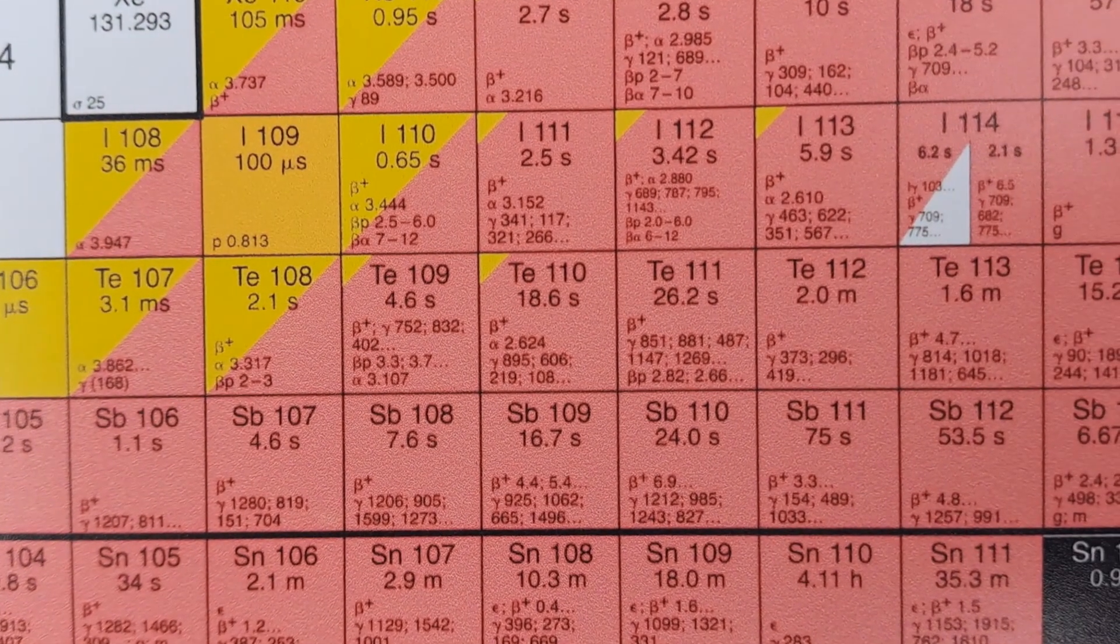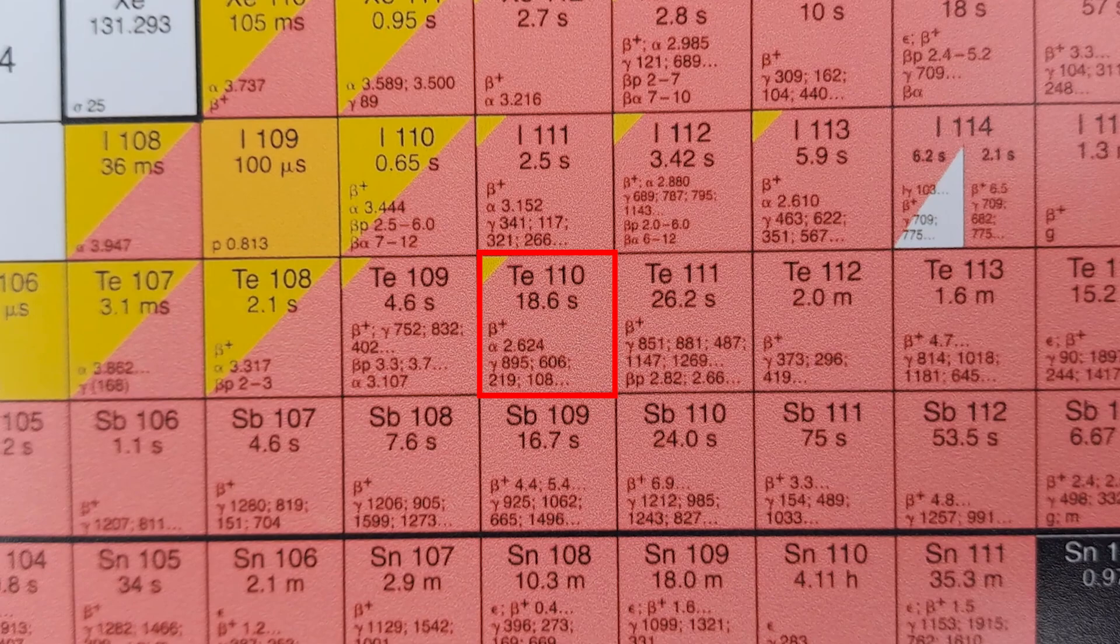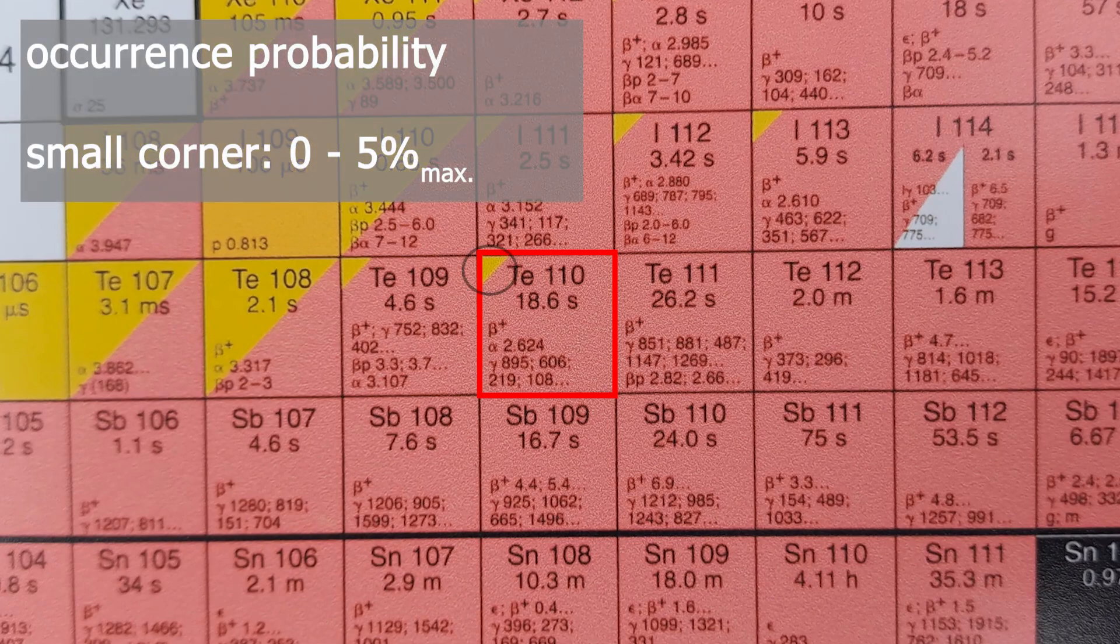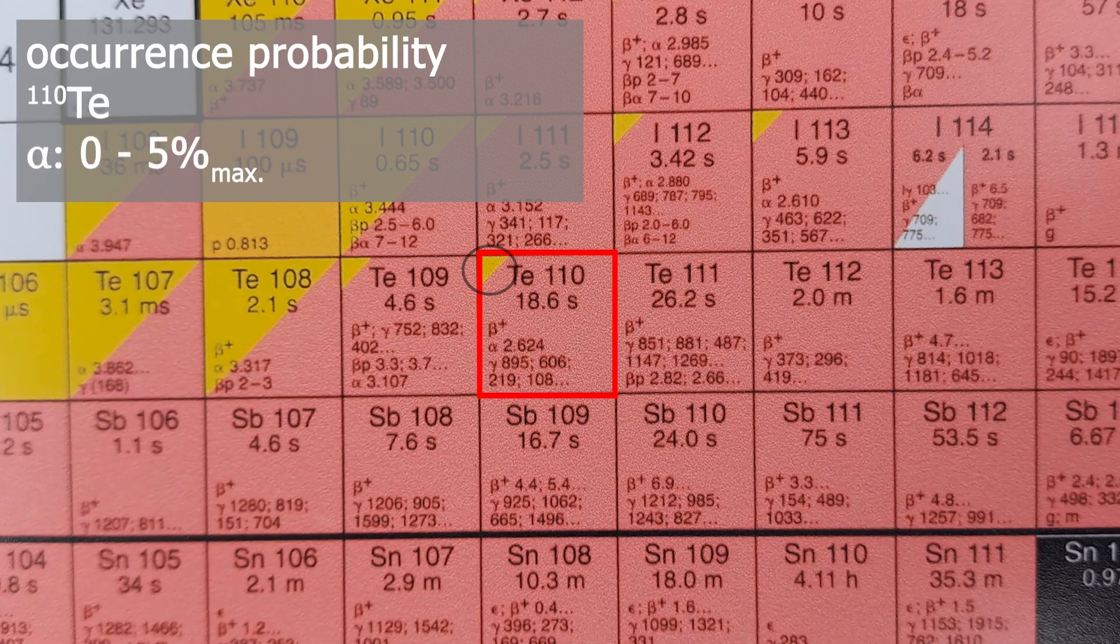Now I've mentioned relative size and energy values. Let's continue there. It does not have to be 50-50 split. A small corner always means that the decay has a probability of up to maximum 5 percent.